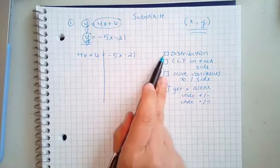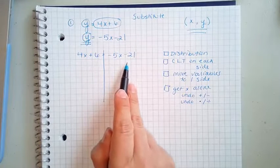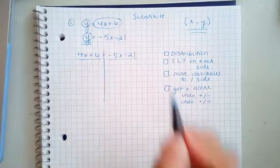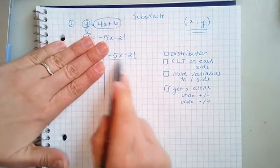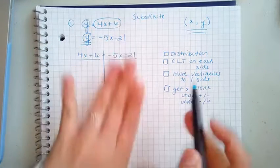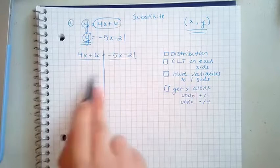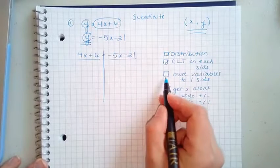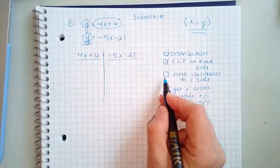So there is no distribution. I know that because there's no parentheses. If I look at each of these sides, this side alone, there's no like terms to combine. This side alone, no like terms to combine. And there are variables on both sides. This was done, this was done. Now we've got to do this. We have to do some work to get this done.